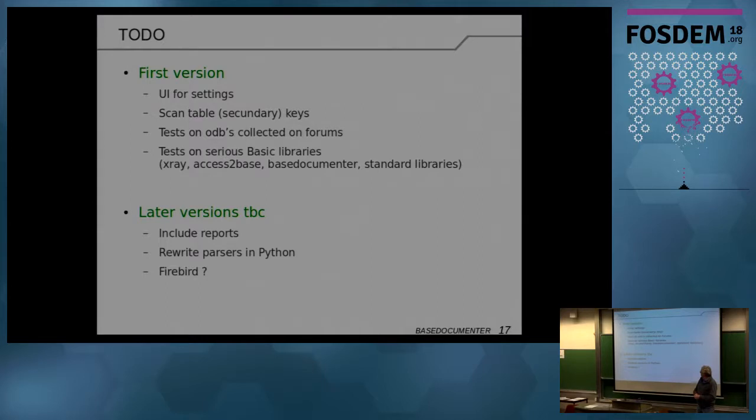And in later versions, I put reports, which are not included yet. And rewrite parsers in Python. Today, the only Python part in this piece of code is the Python is for the ending of trace. I would like to make it also with Firebird instead of HSQLDB, because the repository is just a standard Base file. But today, LibreOffice lacks a number of field types. I need a long varchar type, for instance. It does not exist yet. Probably planned for 6.1 or 6.2.